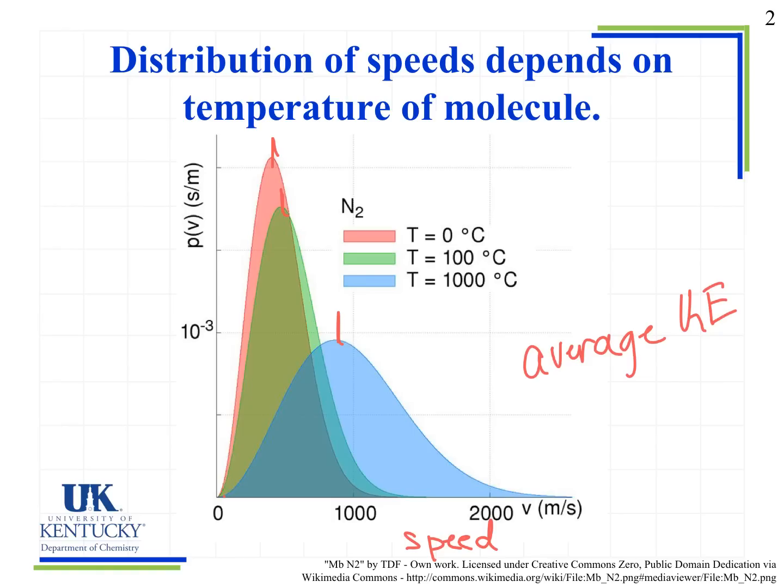So we will still see a distribution. Notice as the temperature increases, that distribution gets broader and shifts to the right. So the higher the temperature, the higher the average kinetic energy, and the higher the speed of the molecule.